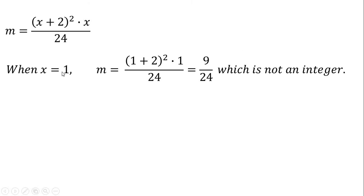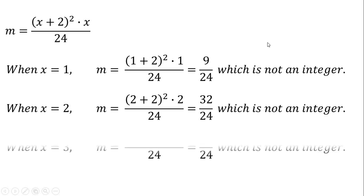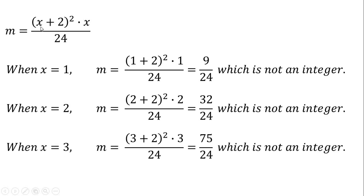When x equals 1: (1 plus 2) is 3, 3 squared is 9, times 1 is 9, and 9 over 24 is not an integer. When x equals 2: (2 plus 2) is 4, 4 squared is 16, times 2 is 32, but 32 over 24 is not an integer. When x equals 3: (3 plus 2) is 5, 5 squared is 25, times 3 is 75, but 75 over 24 is not an integer.